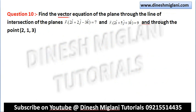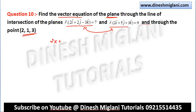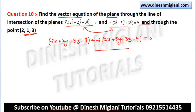Next: find the vector equation of the plane through the intersection of two planes and point (2, 1, 3). Use the same approach: write the combined plane as (2x + 2y − 3z − 7) + λ(2x + 5y + 3z − 9) = 0, then substitute point (2, 1, 3) to find λ. It is best to first convert to Cartesian form, then convert the final answer back into vector form.